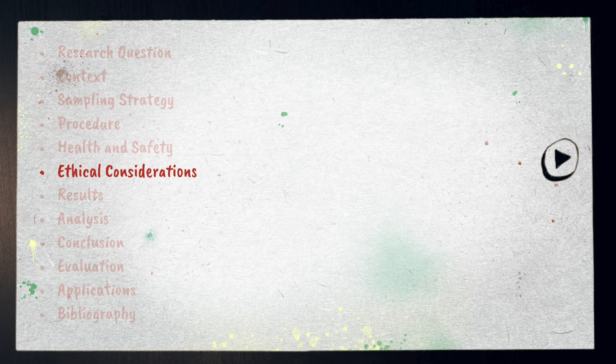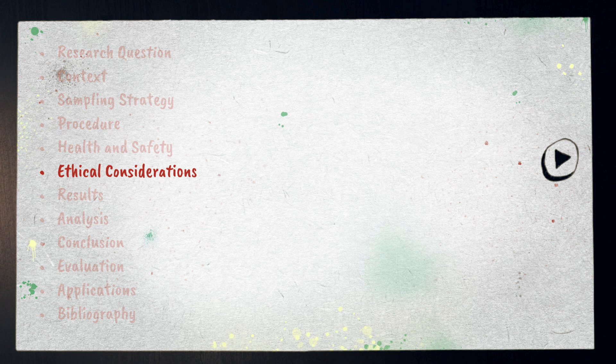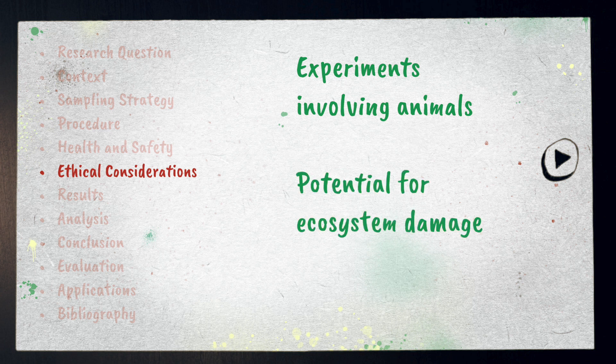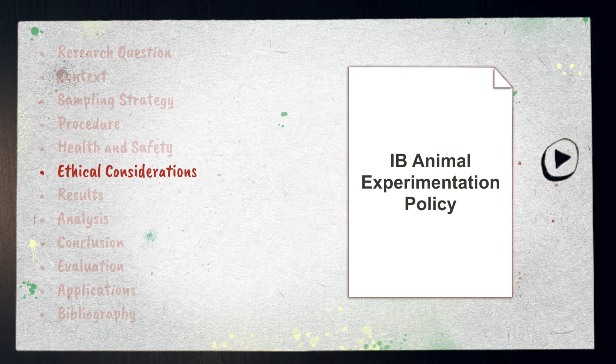Ethical considerations should be outlined if you're doing experiments involving animals, if the experiment has the potential to damage an ecosystem, or if you're collecting data from people. Remember that you often have certain ethical responsibilities to use data appropriately even if it is taken from secondary sources. For ethical considerations, be sure to read the IB Animal Experimentation Policy and comply with it.